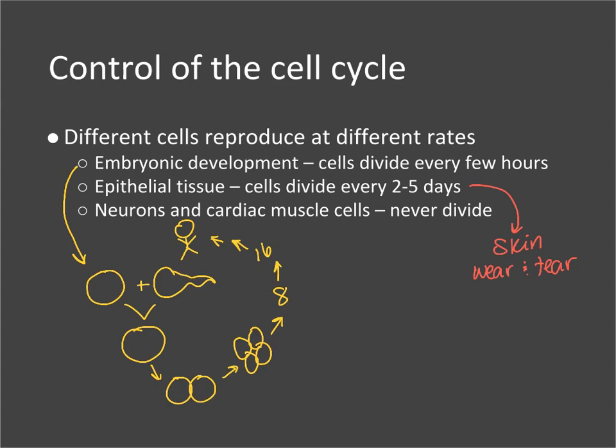Other cells, like neurons and cardiac muscle cells, are never going to divide again once they're formed. That's one reason why damage to these cells is so dangerous — if you damage neurons or cardiac muscle cells, they cannot be replaced or regenerated. That's why nerve damage can often lead to long-term permanent loss of function or sensation.